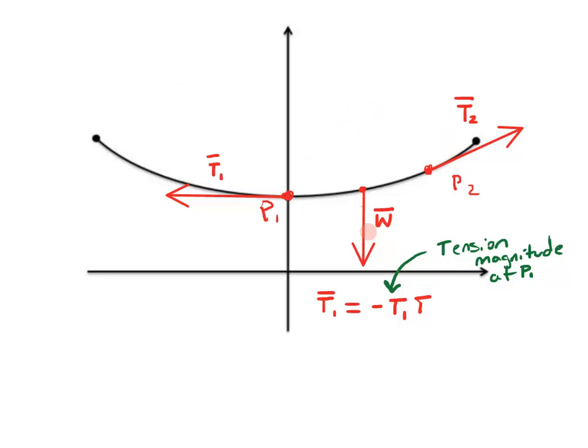Similarly, this W right here is going to be acting in the negative y direction, and it's going to be whatever the weight is, and I'm going to use W to represent the weight of that section of cable, and it's acting in the y direction, and it's negative because it's going down.